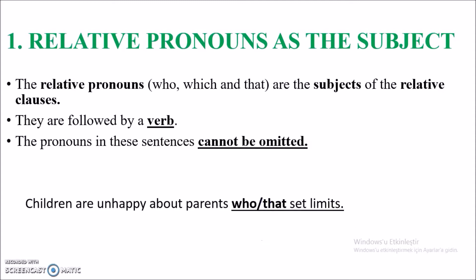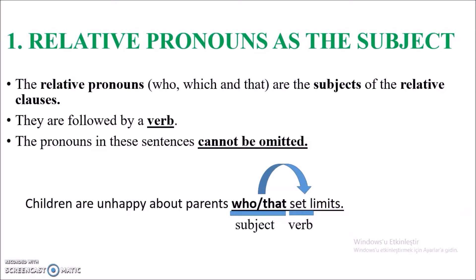Let's look at the examples. 'Children are unhappy about the parents who set limits.' Here, 'who' or 'that' is my relative pronoun and 'set' is my verb. This pronoun is acting like the subject — it is in the place of the subject. If you look right after the pronoun, you see the verb directly. That tells me the pronoun is in subject position, and we are modifying the noun 'parents' — which parents? 'Who set limits.'